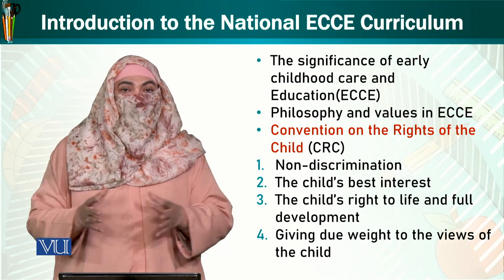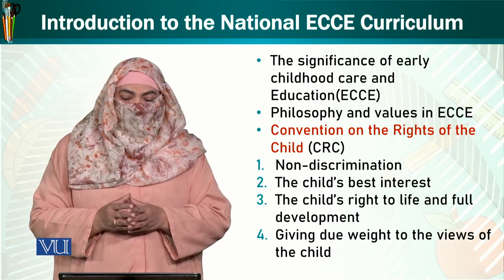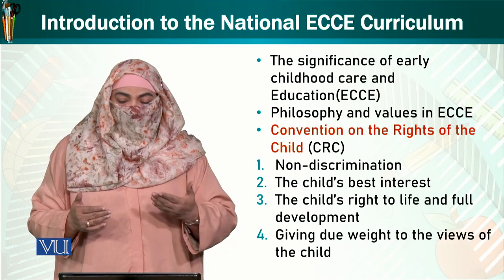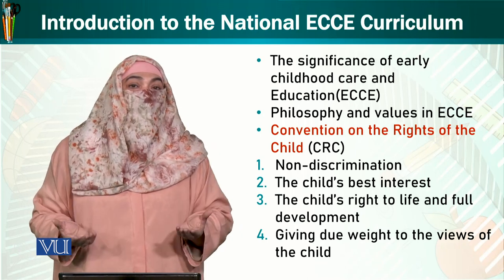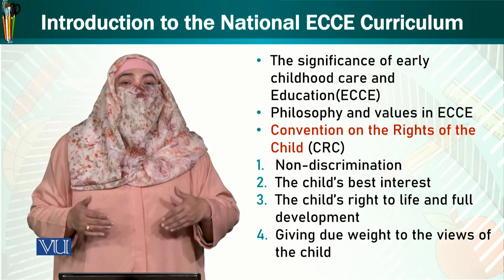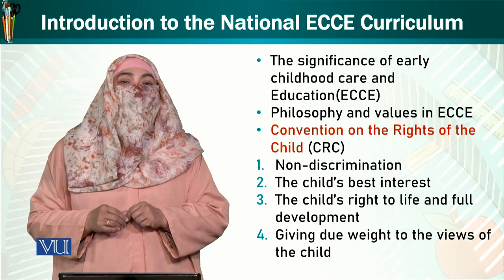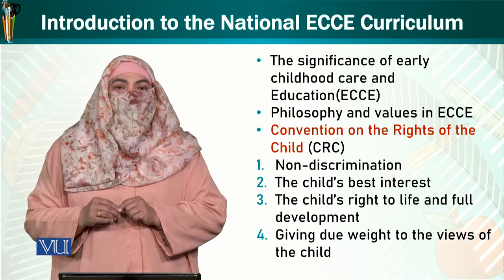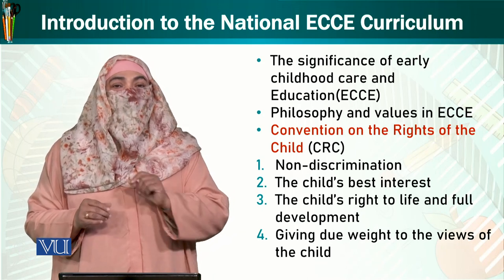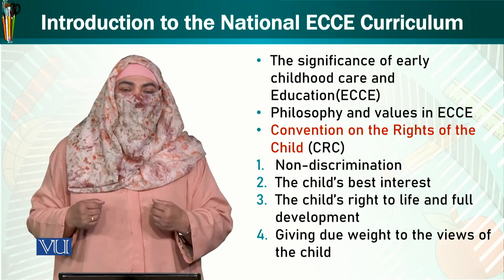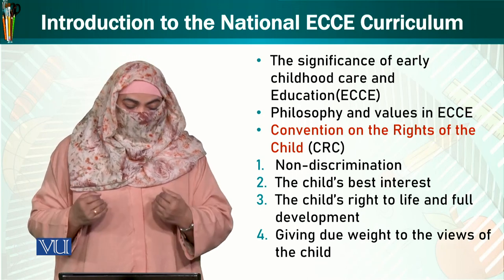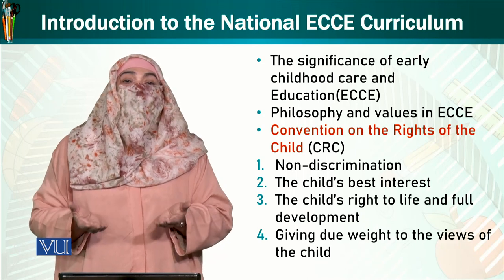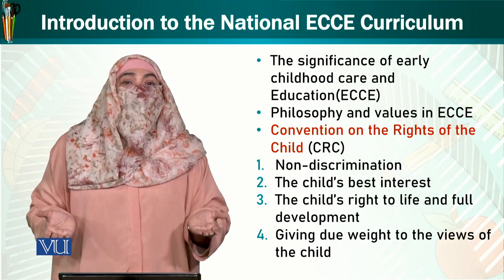The child will not only be developed academically but in a holistic way — holistic development. The child keeps their own point of view. According to cognitive theory, when a child is 2 or 3 years old, they are self-centered, believing that everything belongs to them and that others cannot understand their perspective.